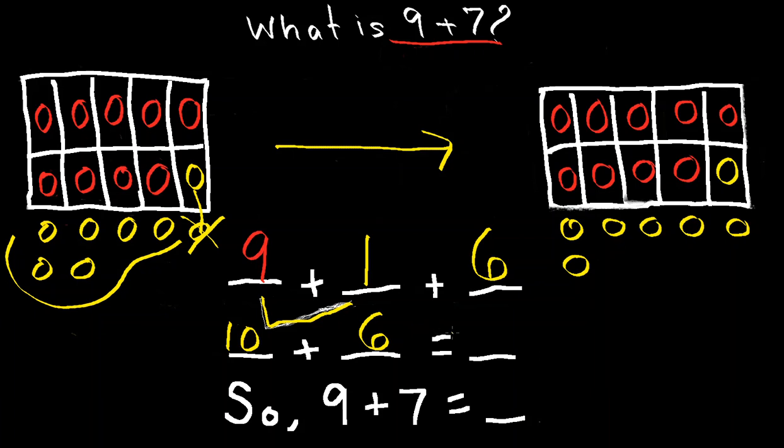So we're going to do 10 plus 6 equals, and let's figure it out. We have 10. We're counting up: 10, 11, 12, 13, 14, 15, 16. 10 plus 6 equals 16.